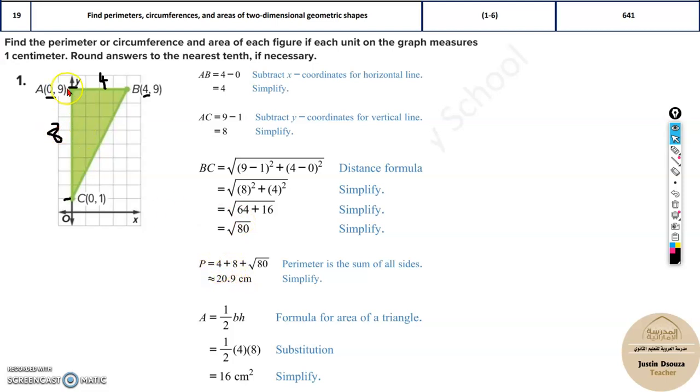That is four plus eight plus this length, that is square root of 80. You're getting the answer. Same way, the area is half base into height.